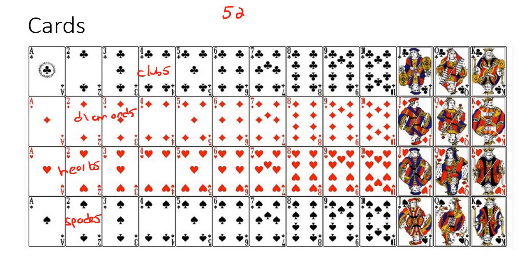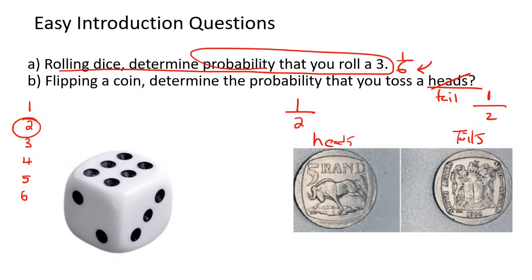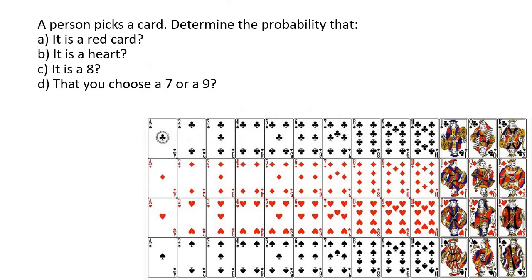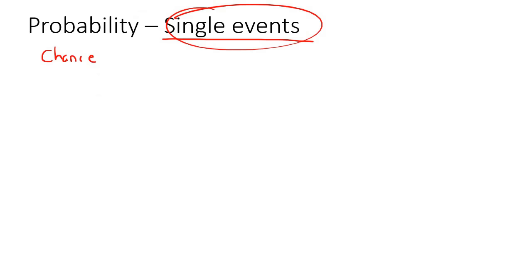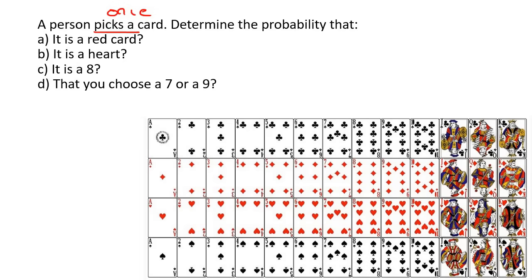Some of you might ask about jokers — we never look at jokers when doing probability with cards. Now, in the dice question we rolled once, in the coin question we flipped once, and in the card question a person picks a card — just once. That is what I mean by single events: we're only doing something once. In later lessons we'll do something and then do something again — that would be called multiple events.